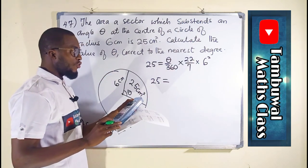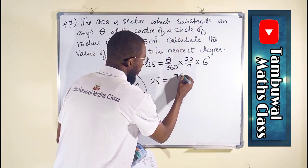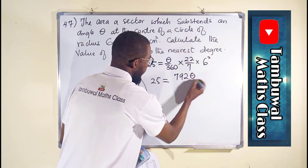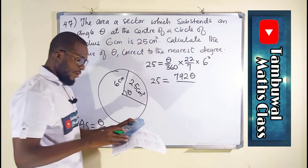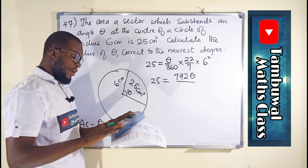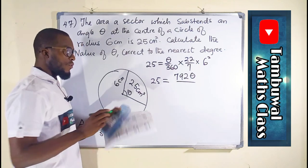We have 792 times theta. We have 792 theta divided by 360 times 7. We have 2520.